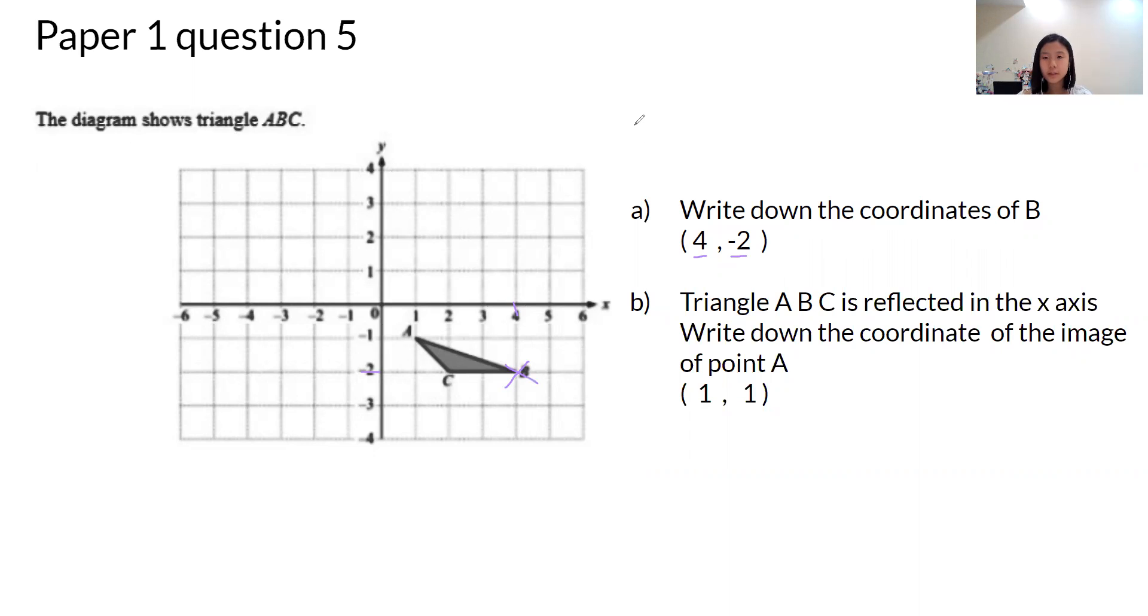Part B, triangle ABC is reflected in the x-axis. Write down the coordinate of the image of point A. A is now here which is one box away from the mirror line. If the shape reflects to the other side it will be here. It will be one box away from the mirror line perpendicularly. So the coordinates is bracket 1 comma 1 bracket.